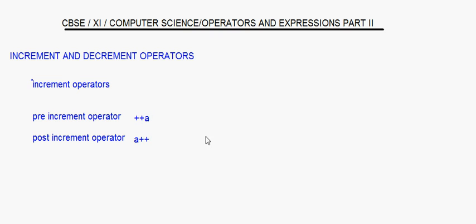If you have a variable like int a equal to 6 and you write a++ or ++a on its own, it doesn't make a difference whether you are doing a post-increment or a pre-increment. But if the post-increment or pre-increment is used with other operators, then there can be a change in the output.